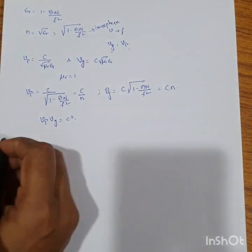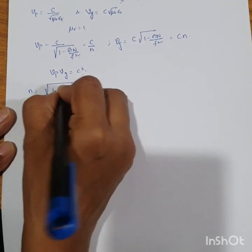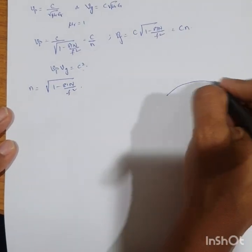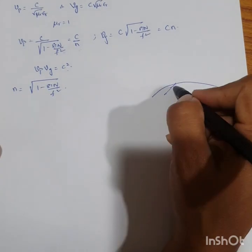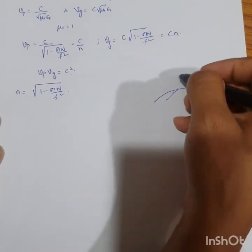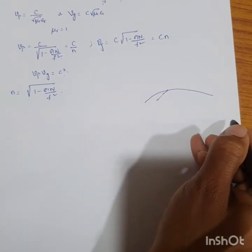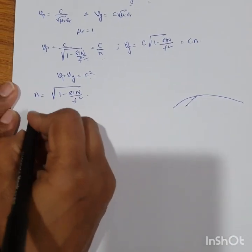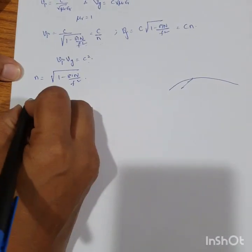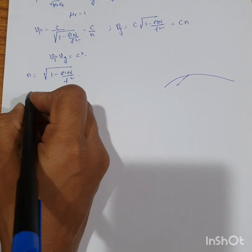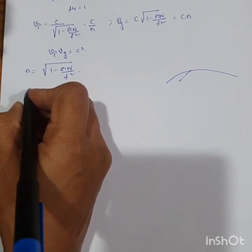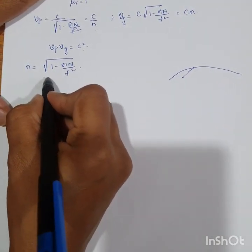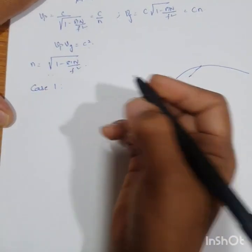Keeping that relation aside, we now take the refractive index expression 1 minus 81n by f squared and consider how a wave entering the ionosphere penetrates, refracts, escapes into the sky, or returns back to the ground. To understand this, we will analyze five cases of the refractive index, studying the wave bending nature in the layers of the ionosphere.